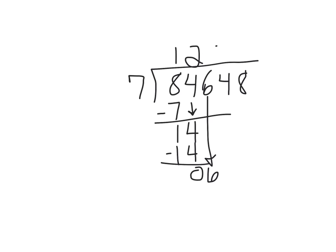7 doesn't go into 6, so we put a 0 up here. 0 times 7 is just 0, you subtract and you get 6, bring the 4 down.